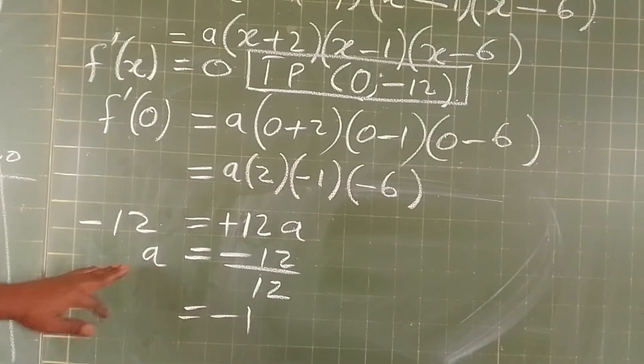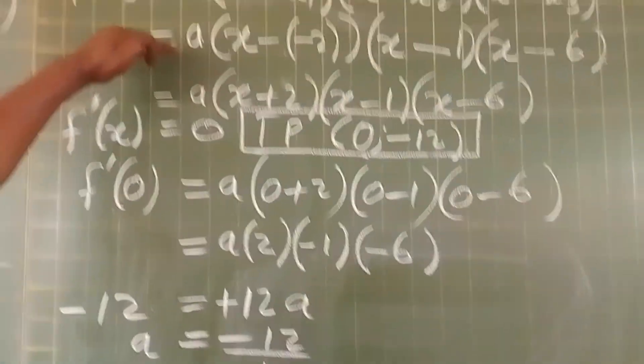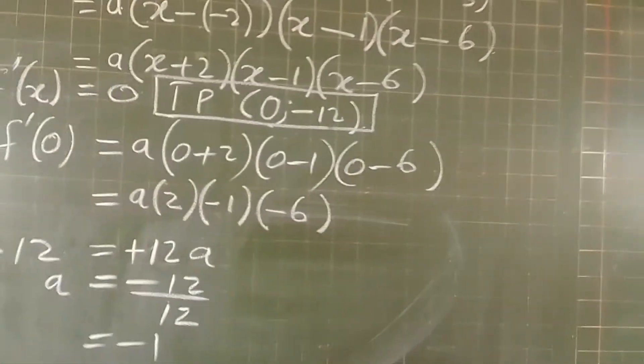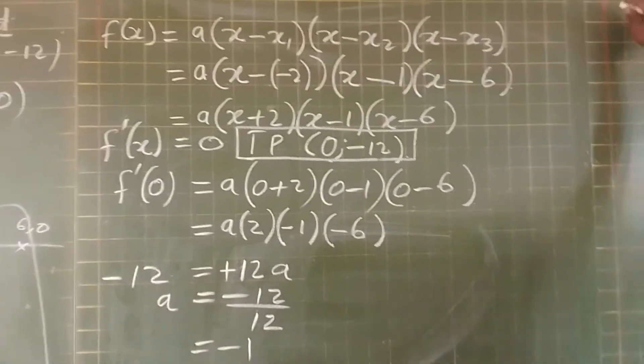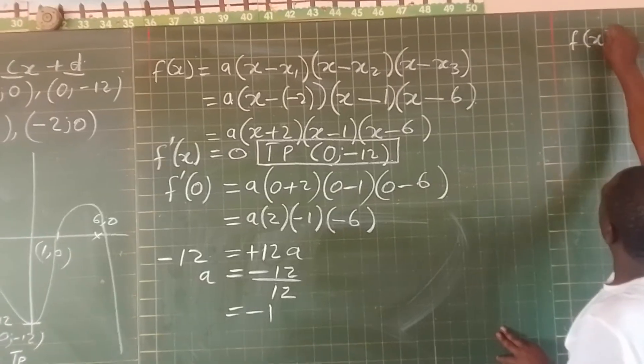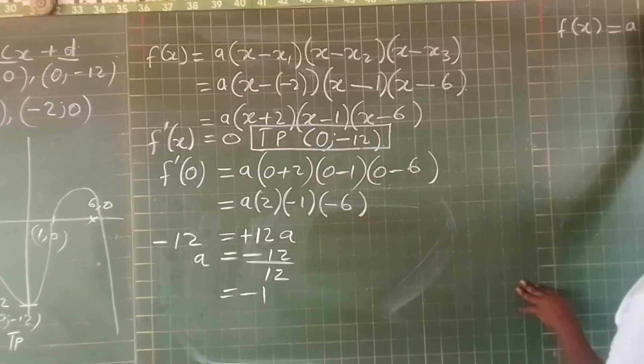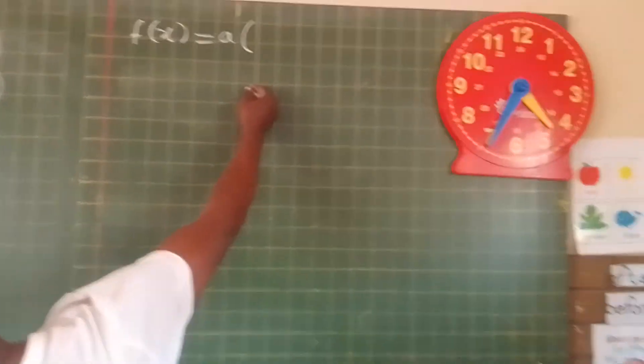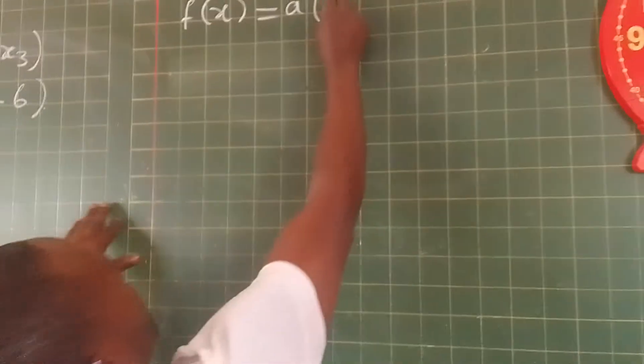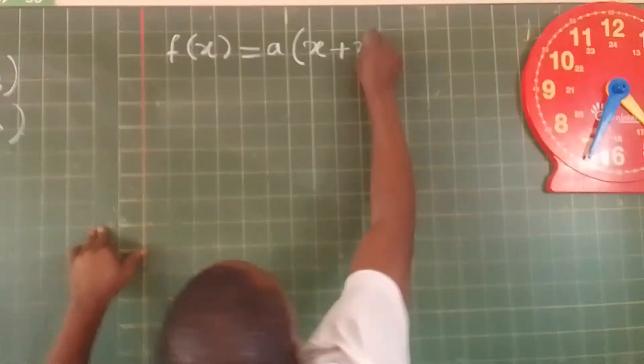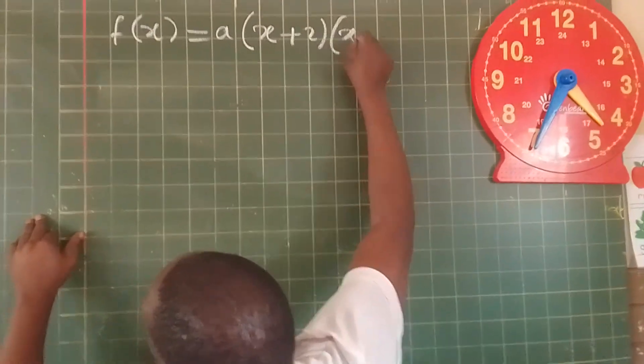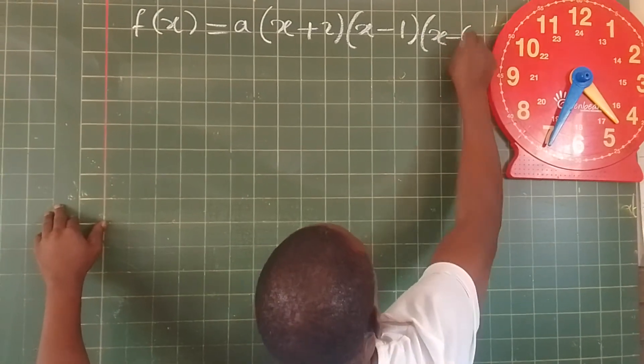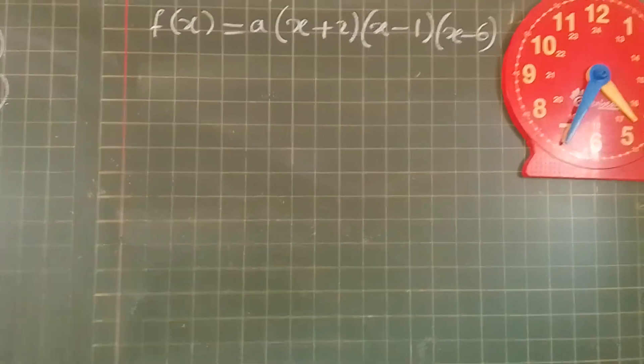Now that we have found the value of a, we take this value of a, we plug it here, then we find the whole equation. Now we say f(x) equals -1 times (x + 2)(x - 1)(x - 6). This is our build off.